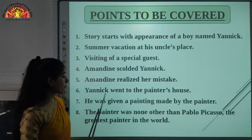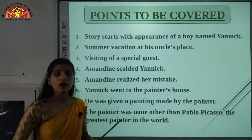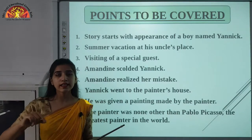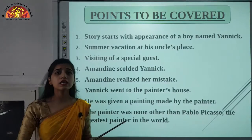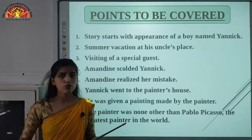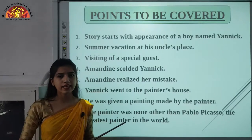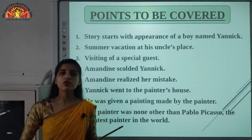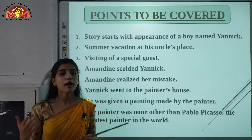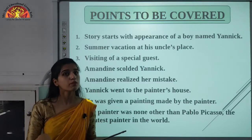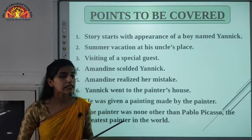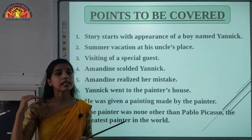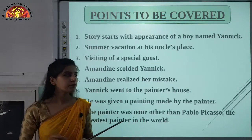Eighth point: the painter was none other than Pablo Picasso, the greatest painter in the world. In the picture at the end, the name 'Picasso' was written. Yannick asked why he had written Picasso since his name was Cezanne. The painter dismissed it. Now we know the painter was Pablo Picasso. By this story, we can conclude that we should not lose humanity — Picasso showed humanity towards the small boy who had come so far just for a single painting.